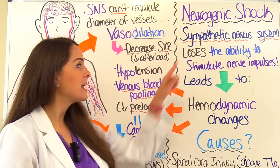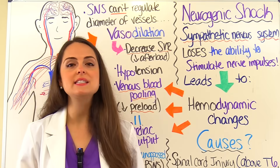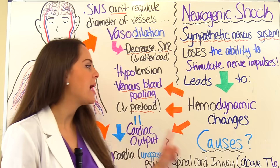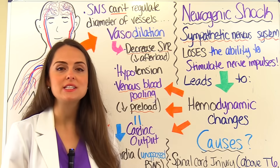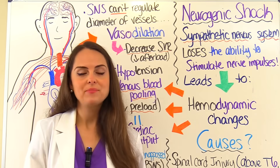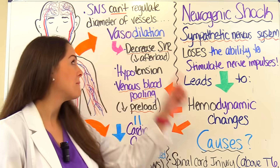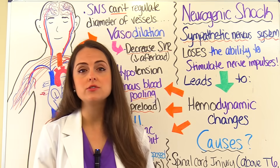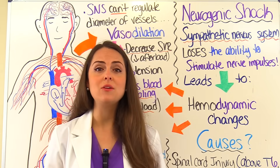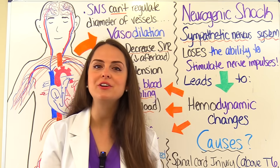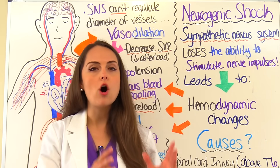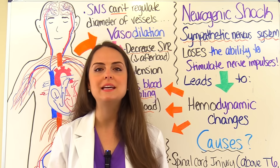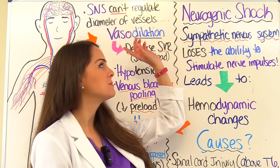Neurogenic shock occurs when the sympathetic nervous system loses the ability to stimulate nerve impulses. When this happens, it's going to lead to major hemodynamic changes in our patient. One of the reasons is due to the massive vasodilation that is occurring. Our vessels are going to be relaxed and wide, and in the end, this leads to decreased tissue perfusion — the amount of oxygen that can go to those cells that make up our tissues and organs is very limited, which is why we're going to see signs and symptoms of shock.